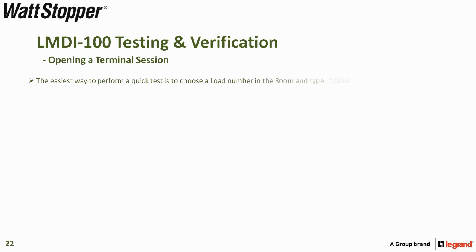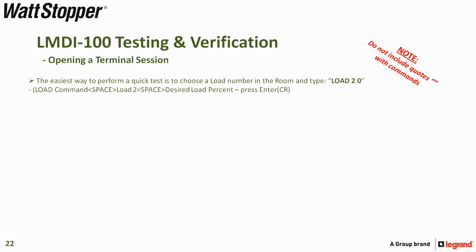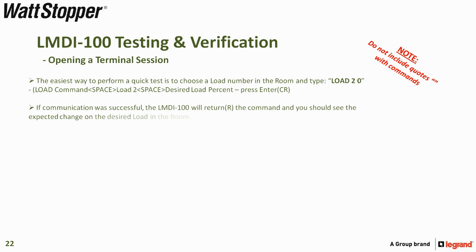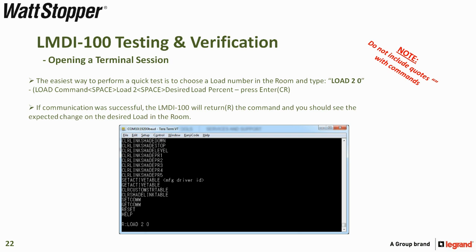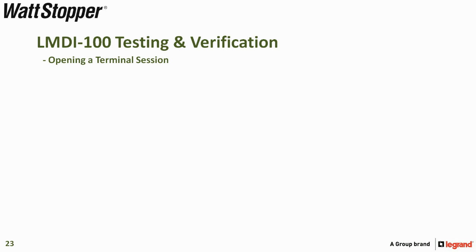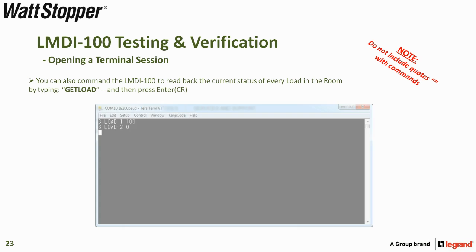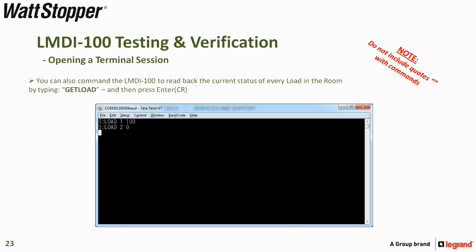The easiest way to perform a quick test is to use the load command. For example, type 'load 2 0', which will drive load number two to zero percent. After pressing the Enter key, and if communication was successful, the LMDI100 will return the command and you should see the expected change on the desired load in the room. You can also command the LMDI100 to read back the current status of every load in the room by typing 'get load' and pressing Enter. This will return every load in the room as well as their percentage.